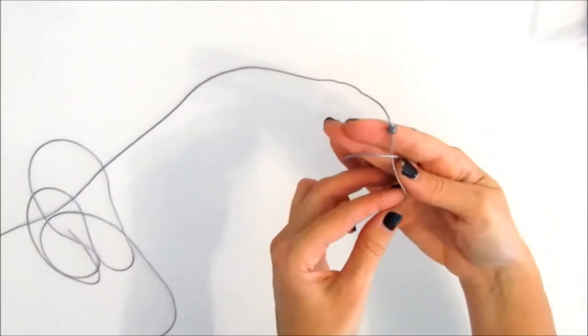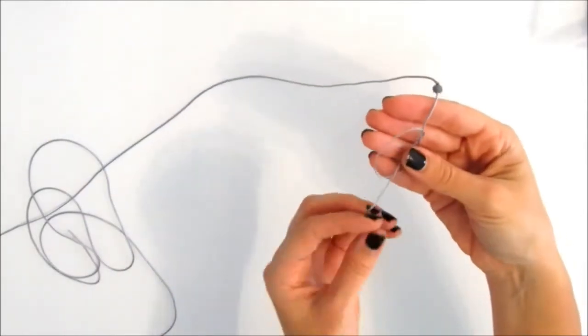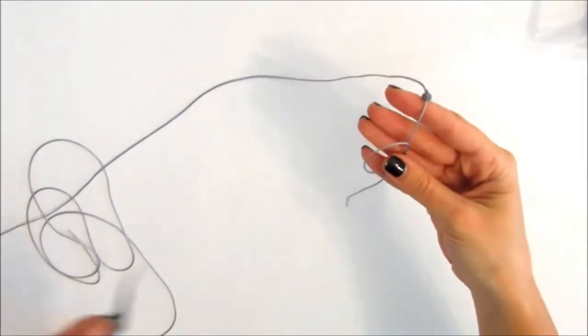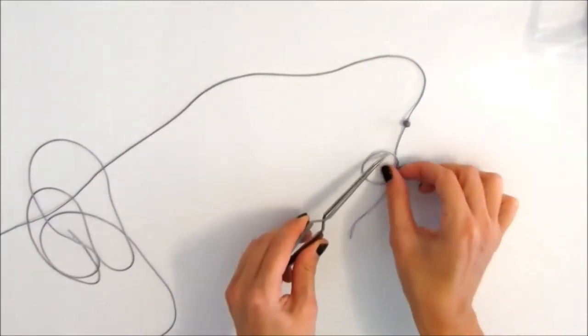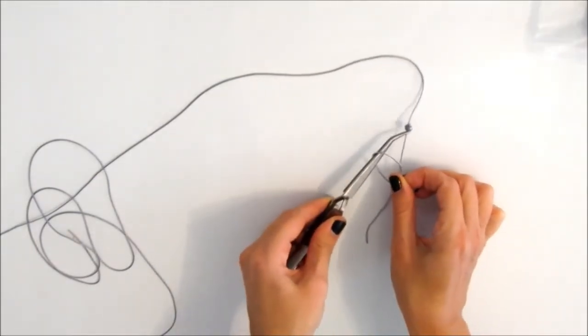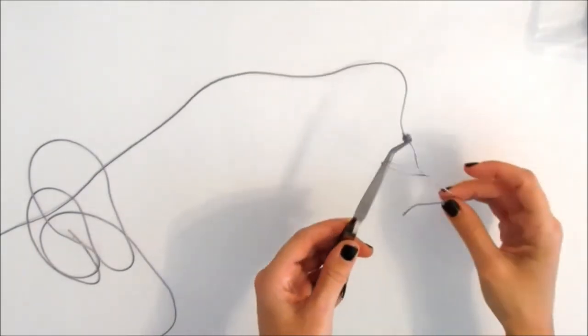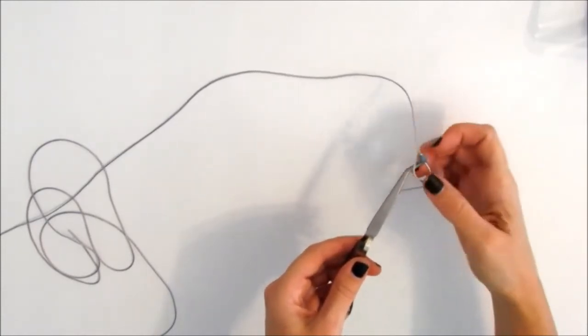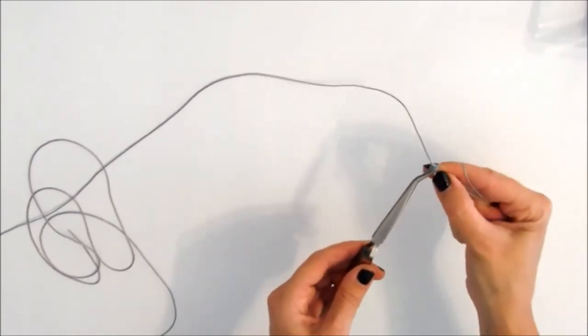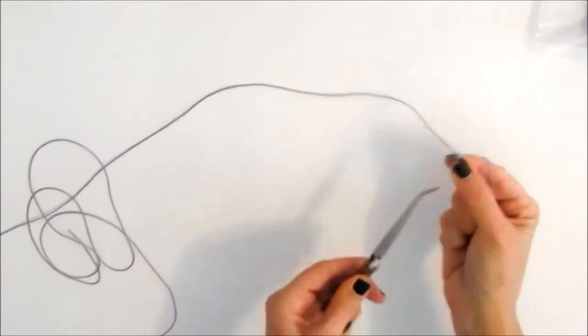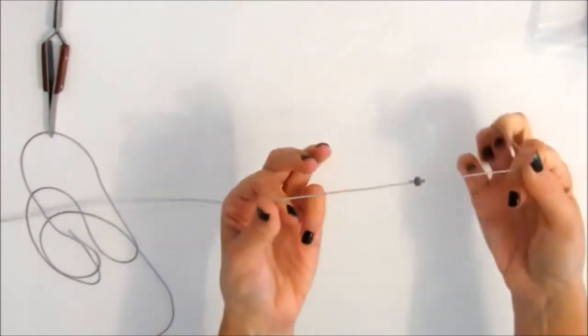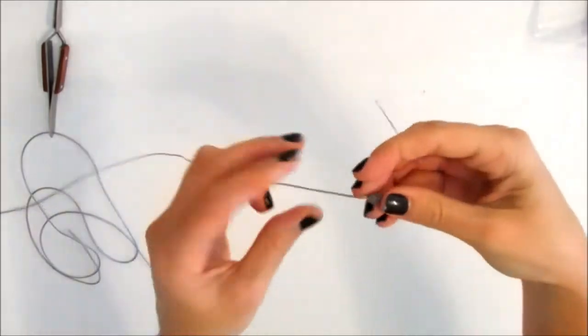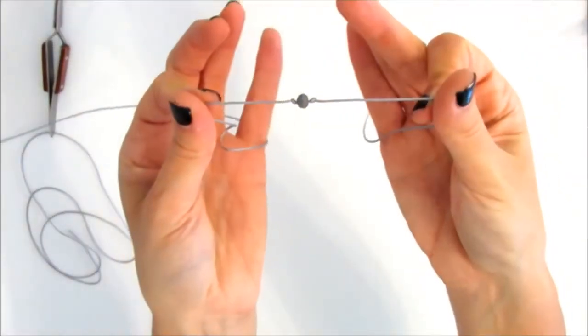And we make a simple knot, a loose one. Then we take the tweezers pin, insert it in the loose knot and grab the cord right below the first bead and we tie it. And we remove the pin and tie it again with our fingers to make it more tight. So now our first bead is ready.